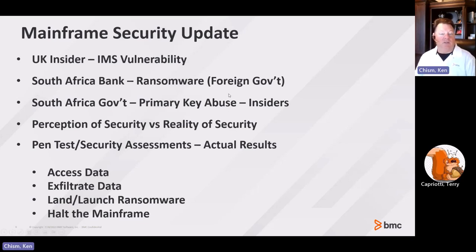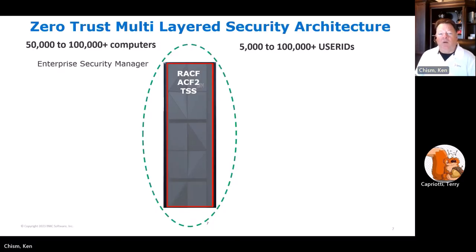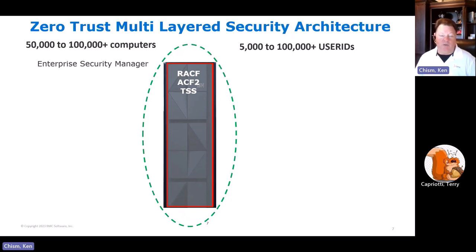Interestingly enough, there's a perception among mainframe team members that the mainframe is secure — which it's securable, but it may not be as secure as people think. Mainframes have vulnerabilities, and BMC performs security assessments and penetration tests to identify vulnerabilities that could potentially lead users to access data, move data off of the mainframe, land and launch malware, and maybe even bring the mainframe down. So there are numerous potential vulnerabilities, and our services team is highly skilled and able to investigate those.